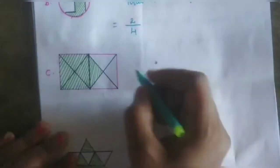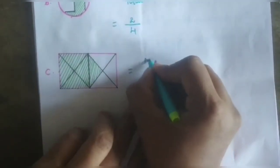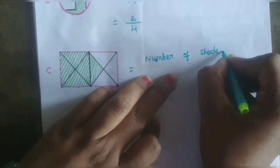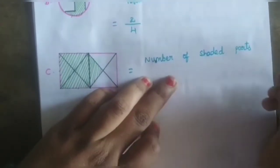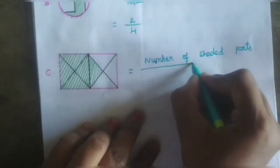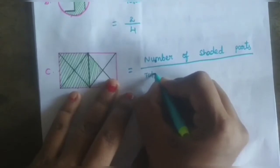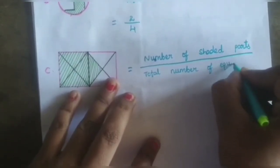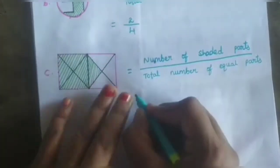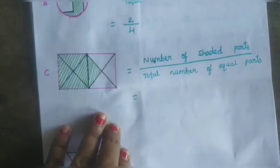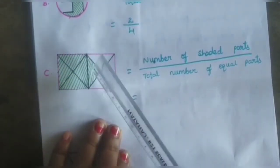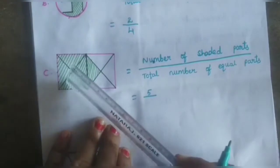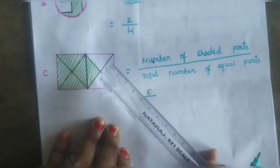For the third figure, here also we use number of shaded parts divided by total number of equal parts. Counting the shaded parts: 1, 2, 3, 4, 5. And the total equal parts are also 1, 2, 3, 4, 5.